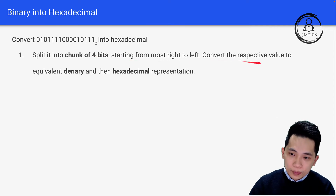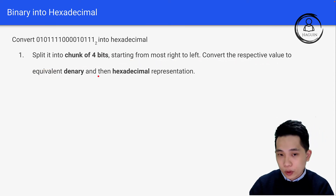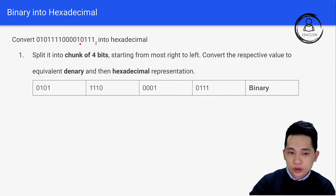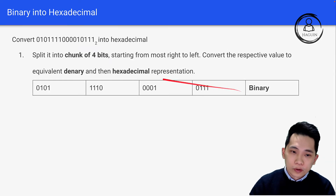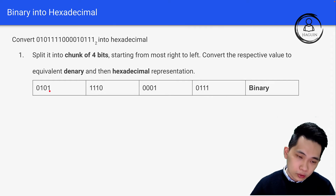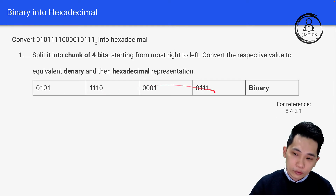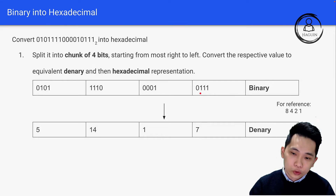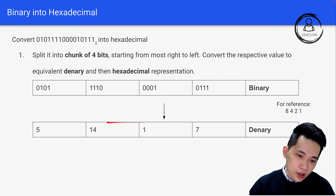We convert each 4-bit chunk to its decimal value and then to its hexadecimal representation. For example, with a reference of 1, 2, 4, 8: the chunk 0111 equals 1+2+4 = 7. Another chunk gives 14, and another gives 5.